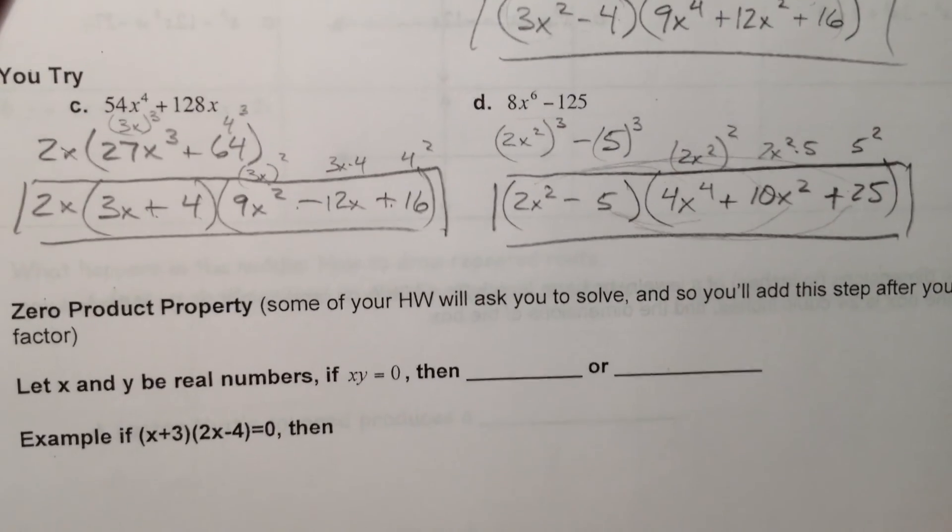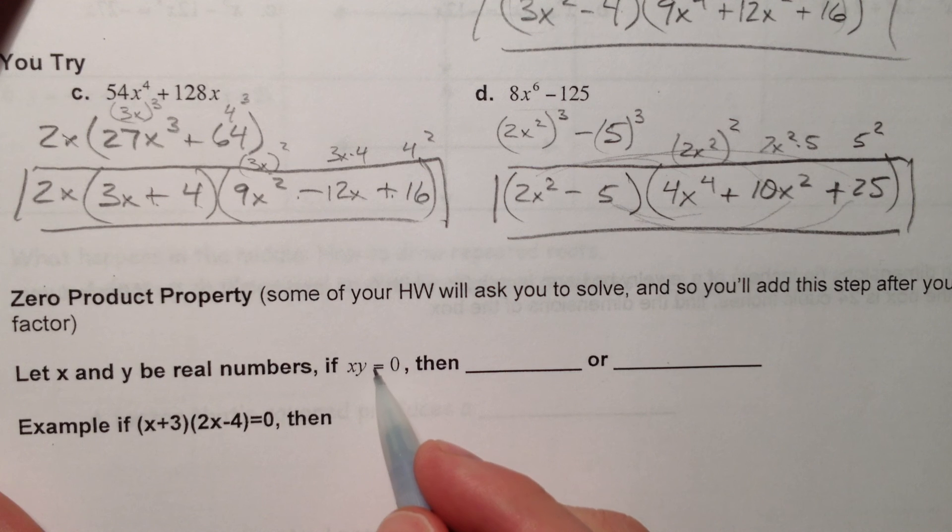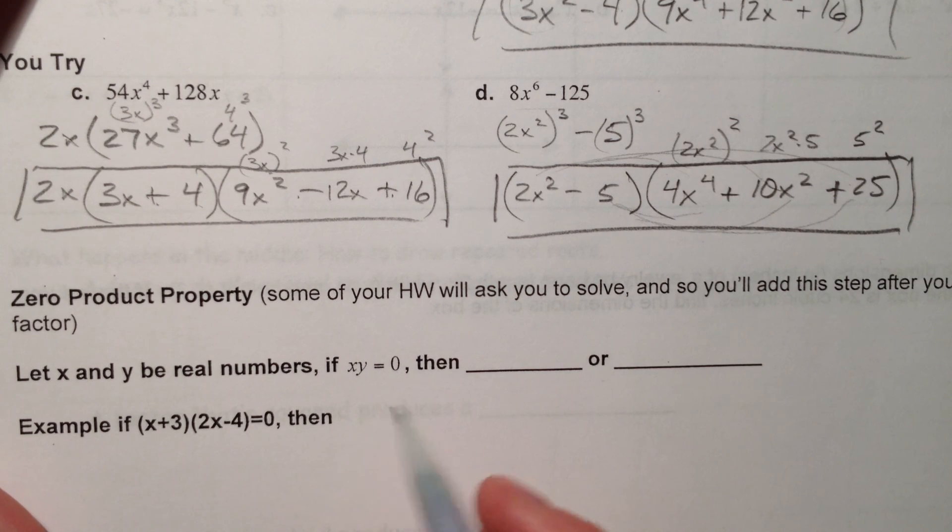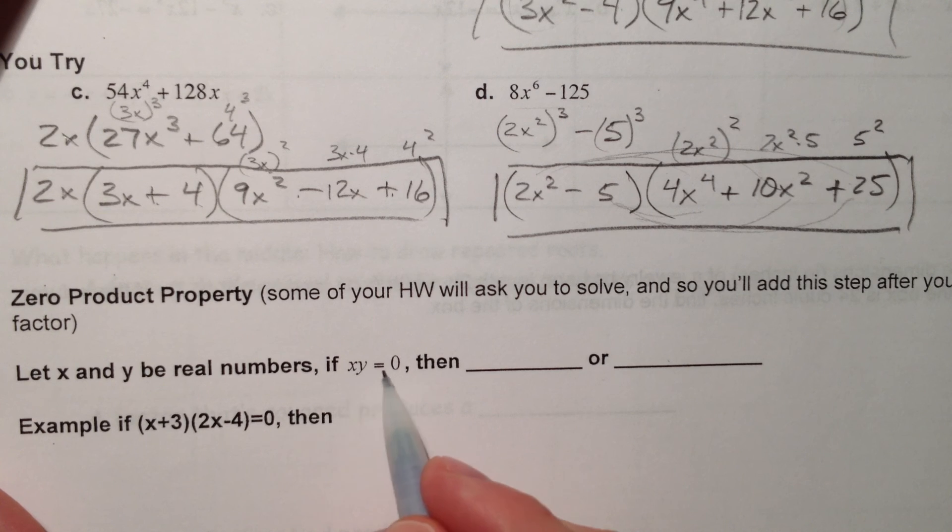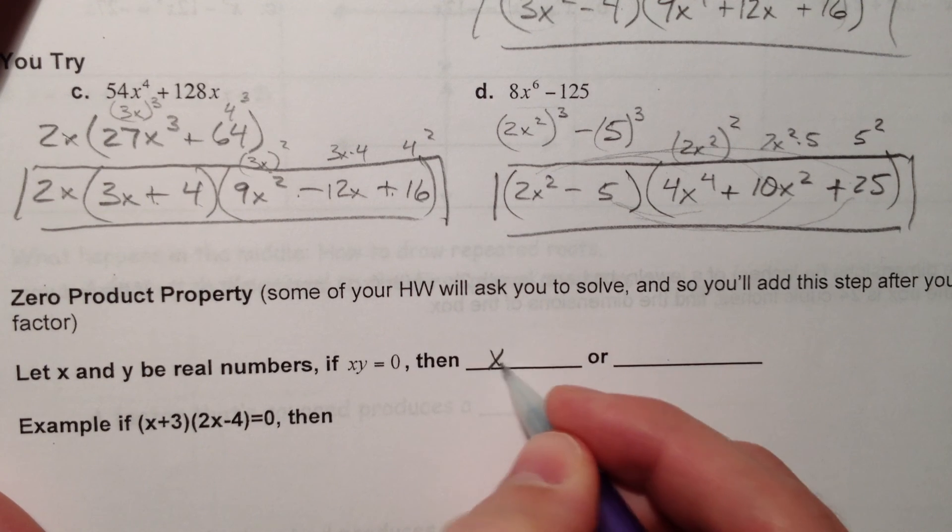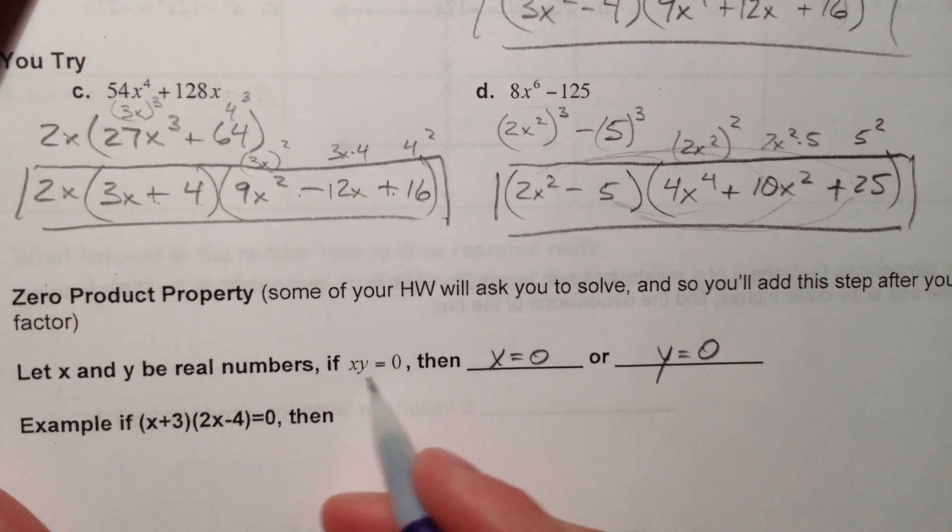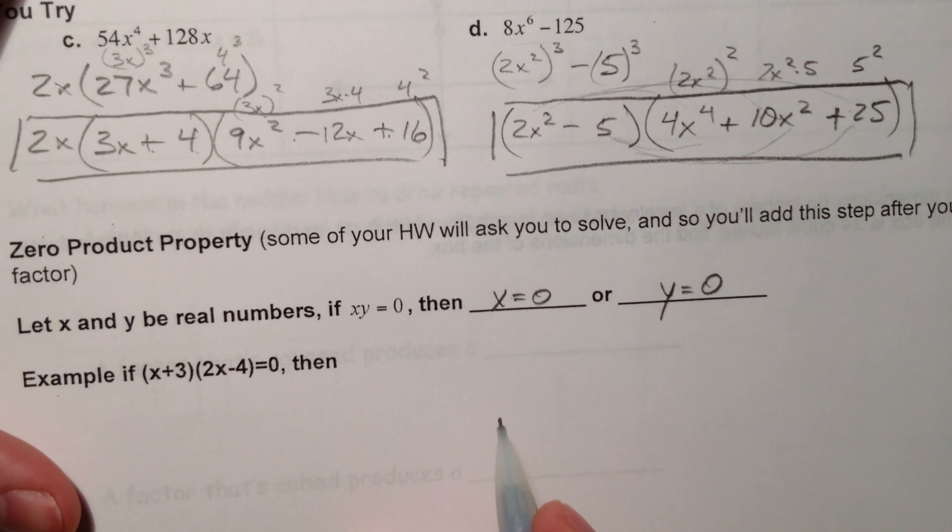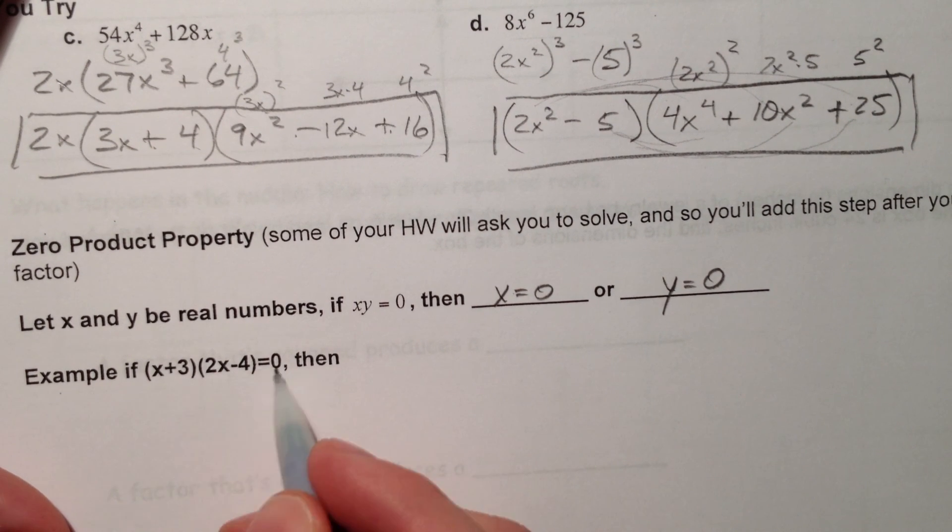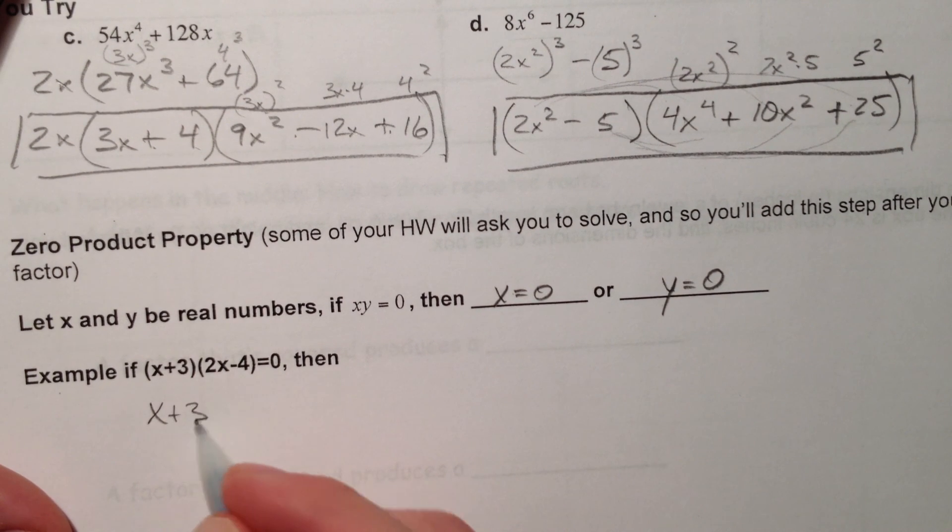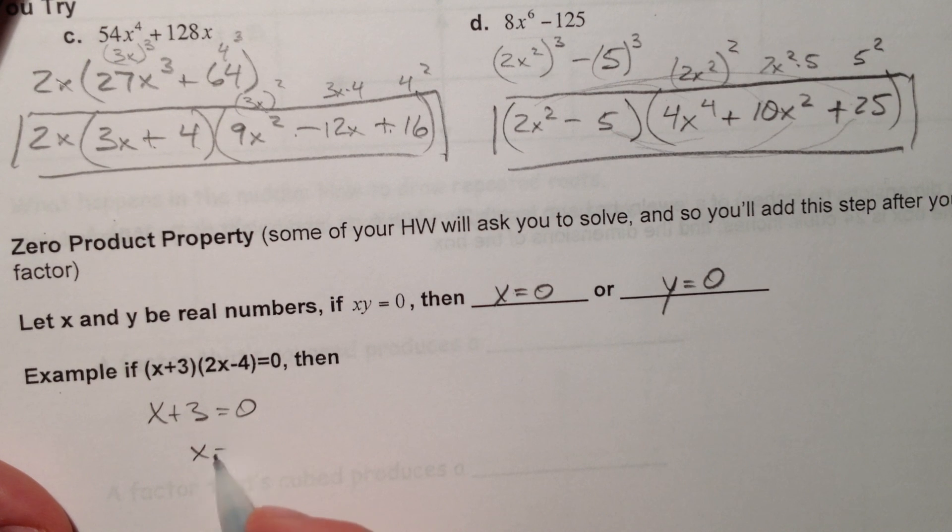Alright. So some of our homework is going to ask us. It's going to set it equal to 0 and ask you to solve. And so if x times y equals 0, then either x equals 0 or y equals 0. That's the only way two numbers can multiply to 0. One of them has to be 0. For example, if this equals 0, then either x + 3 equals 0 and x equals negative 3. And we've done this before. That's why it's...